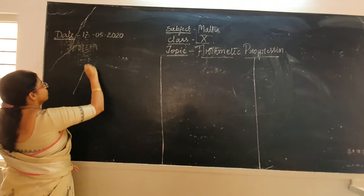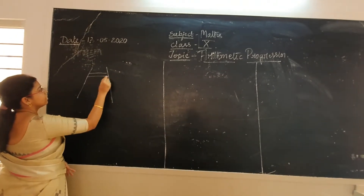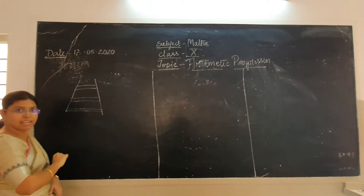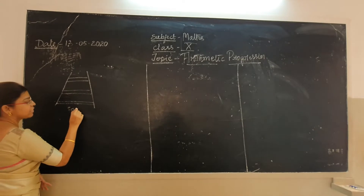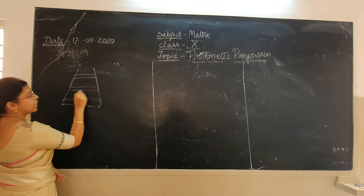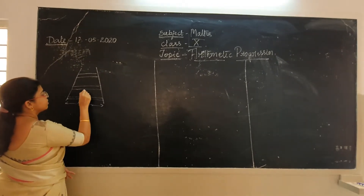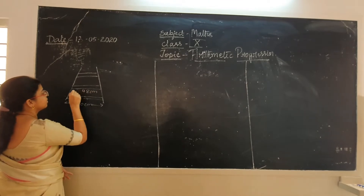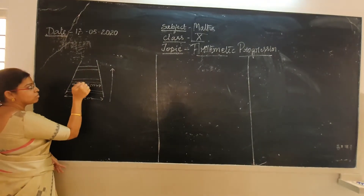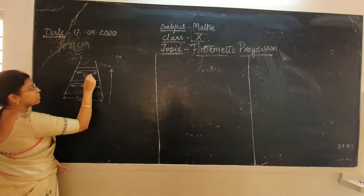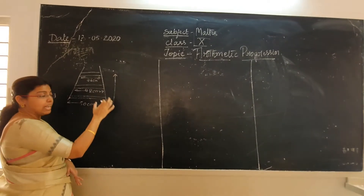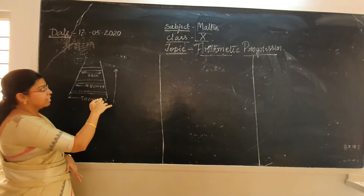Here you see a ladder. There are three rungs on the ladder. Let the bottom rung have a length of 50 centimeters. As you go up, the length of the rung reduces — it could be 48, then 46. So is there any pattern or sequence in the decrementing length of the rungs? There is. We will come to that later.